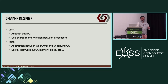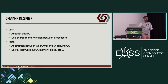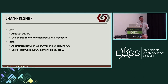Two more implementations are Virtio, which abstracts out the inter-process communication using the shared memory region between processors, and Metal, which is essentially the abstraction of the underlying OS primitives that OpenAMP uses to ensure that all communication between processors is efficient and not just haphazardly implemented.